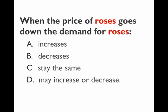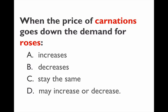When something other than the price changes, then the whole demand changes. For instance, when the price of carnations goes down, the demand for roses will go down, because now people are willing to pay less money for every rose — they'd rather buy a carnation. So the willingness to pay for a rose, for most people, will go down.